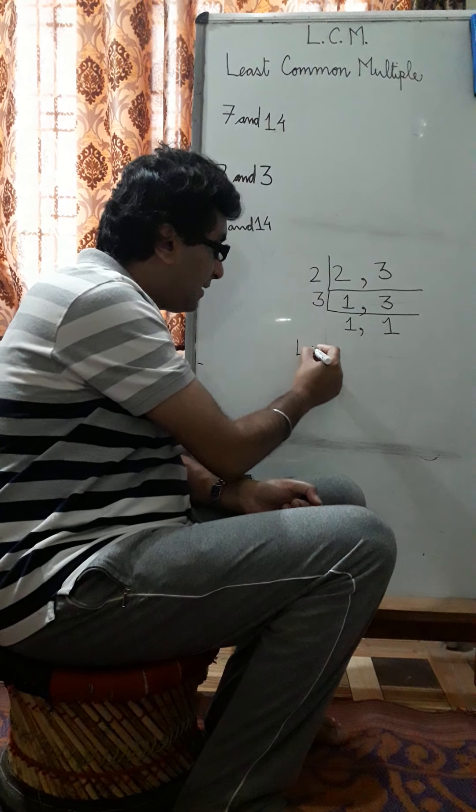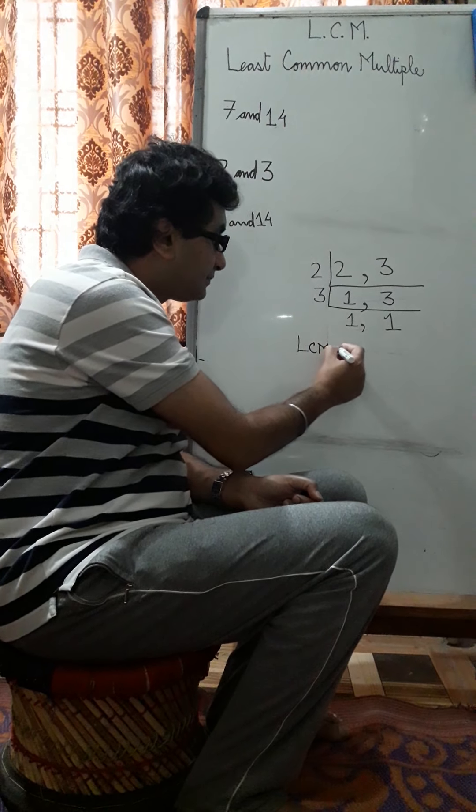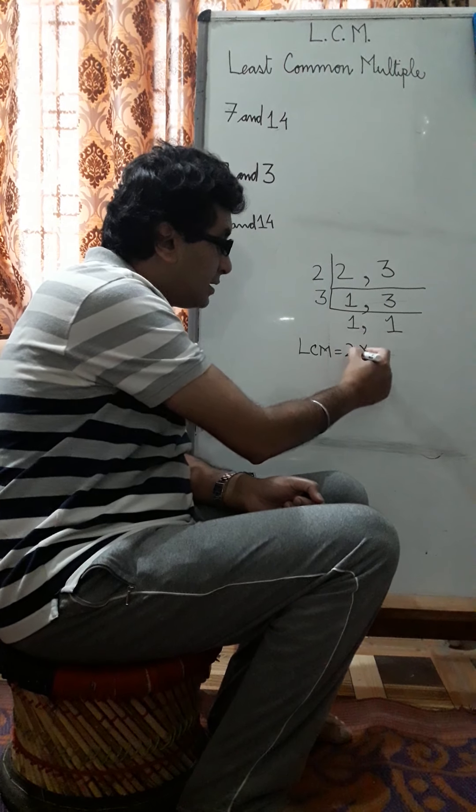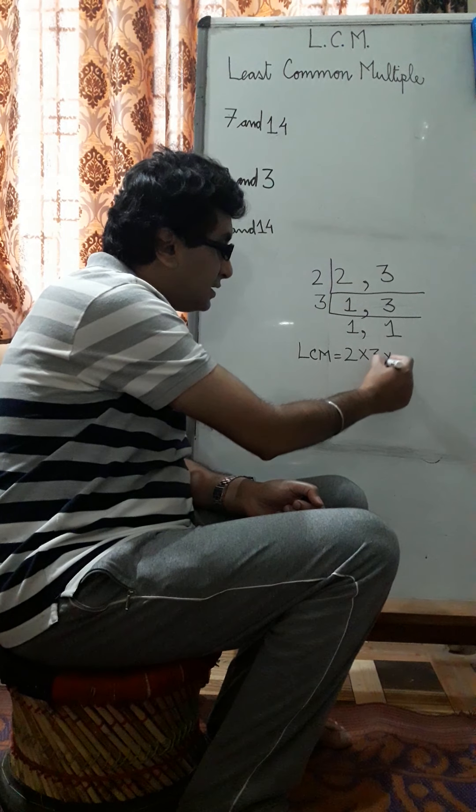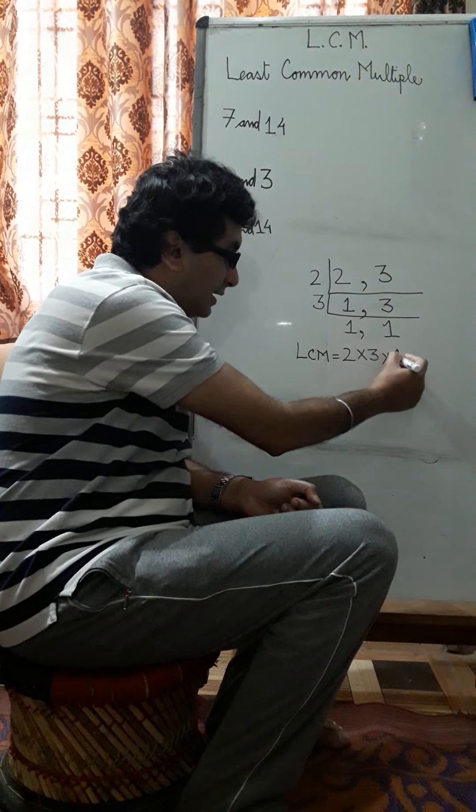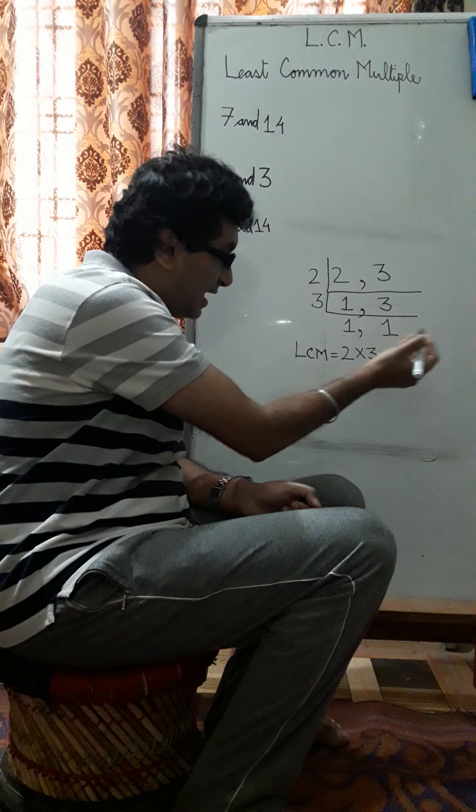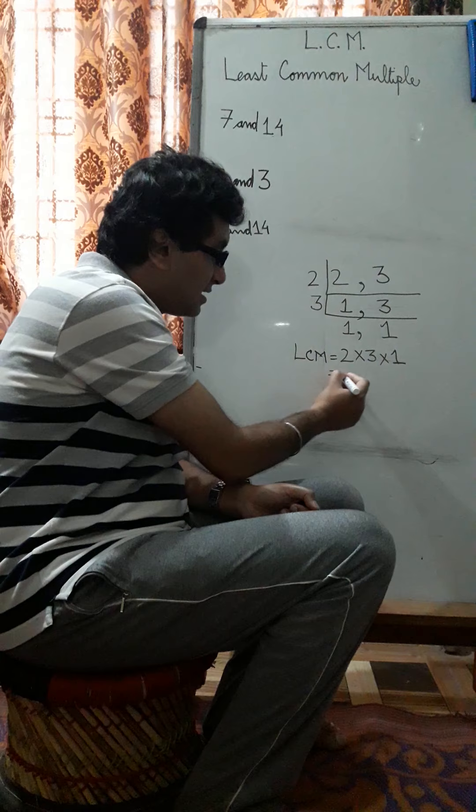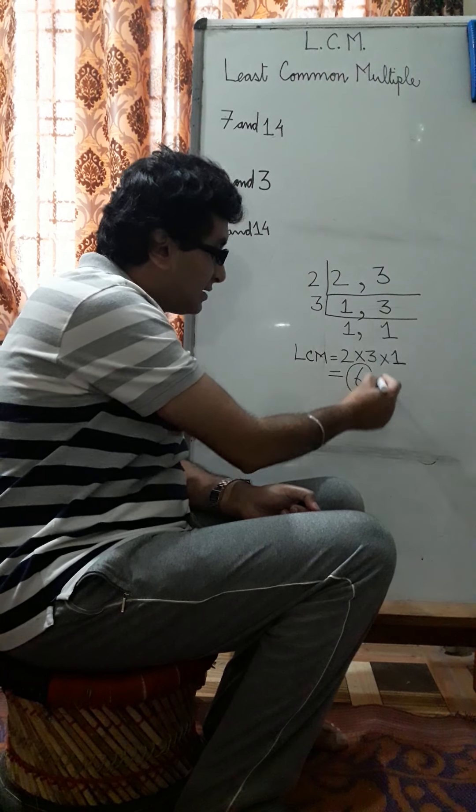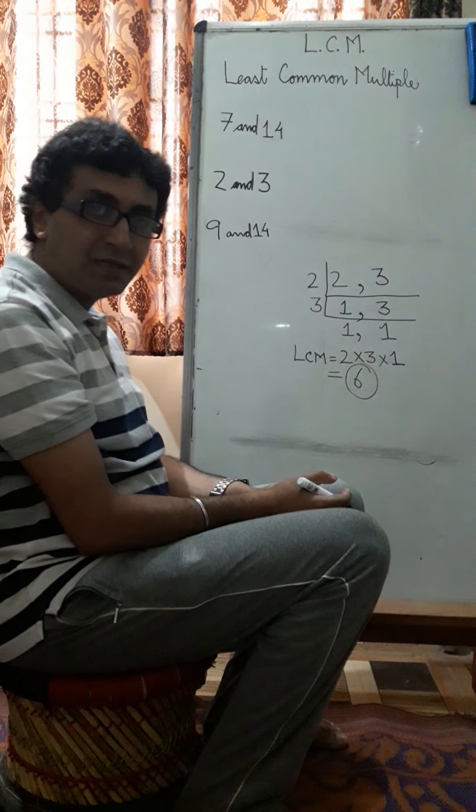Now what will be the LCM? The LCM will be 2 into 3 into what is common here? 1. If you want to write 2 ones you can, but they will be the same thing. So the LCM will be 6 of 2 and 3.